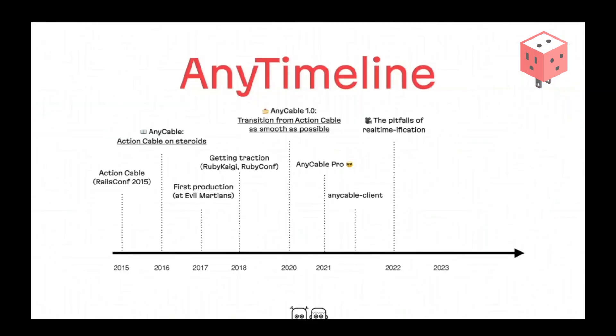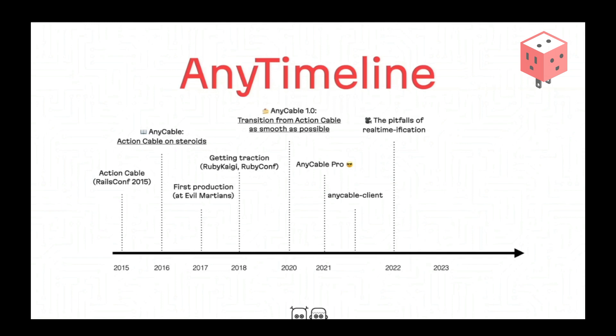A year ago, I presented a talk at RailsConf which was the main driver for upcoming releases. I demonstrated the current limitations of Action Cable and AnyCable as well — in terms of data consistency and how we build real-time applications. At the same talk, I demonstrated some early proof of concept that eventually led to AnyCable version 1.4, where we finally introduced features that extend Action Cable. We're still built on top of Action Cable tooling and protocol, but we enhance it to support reliability-related features.